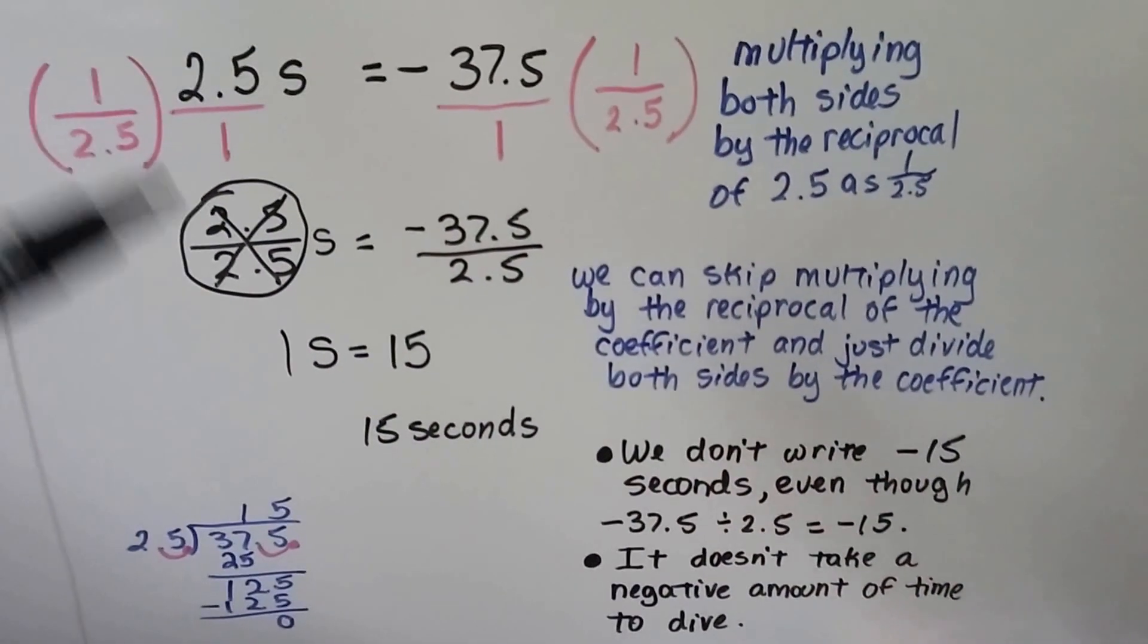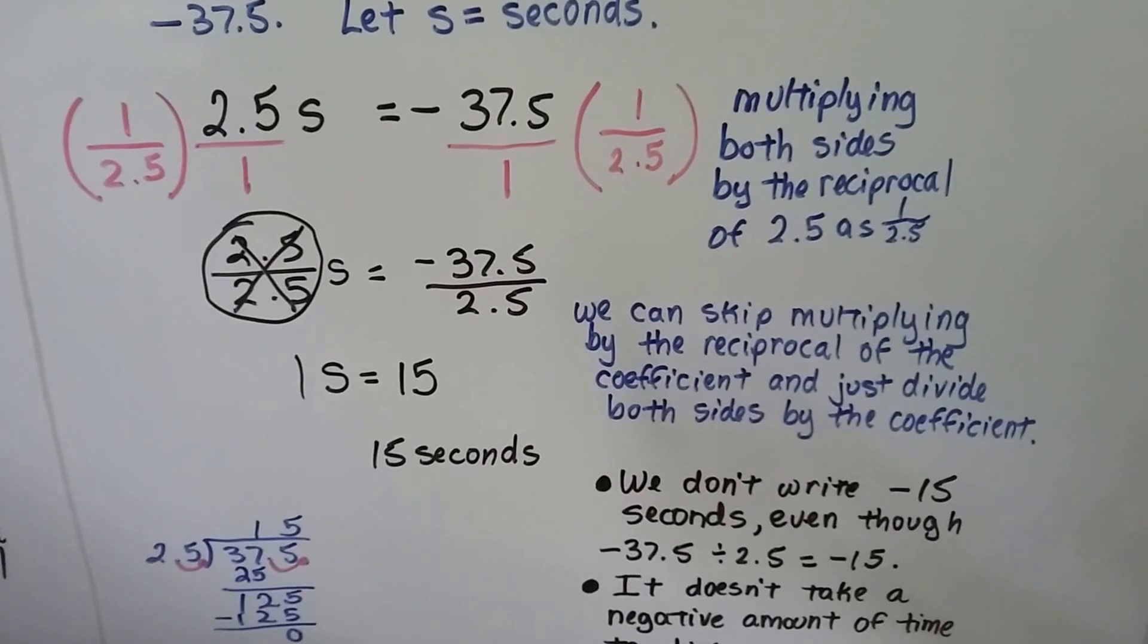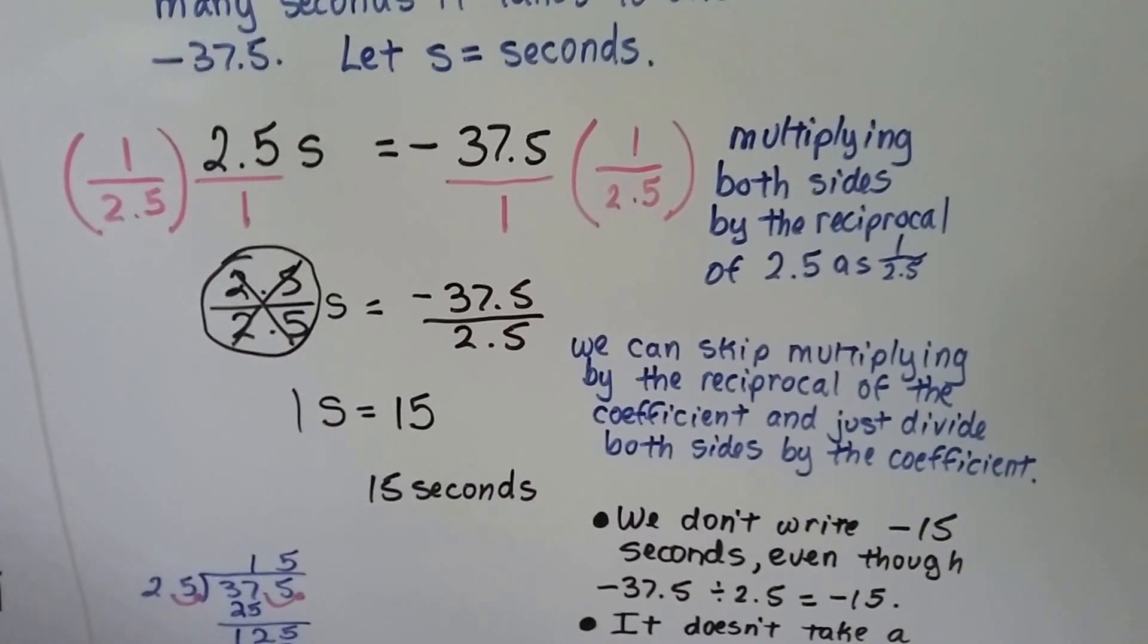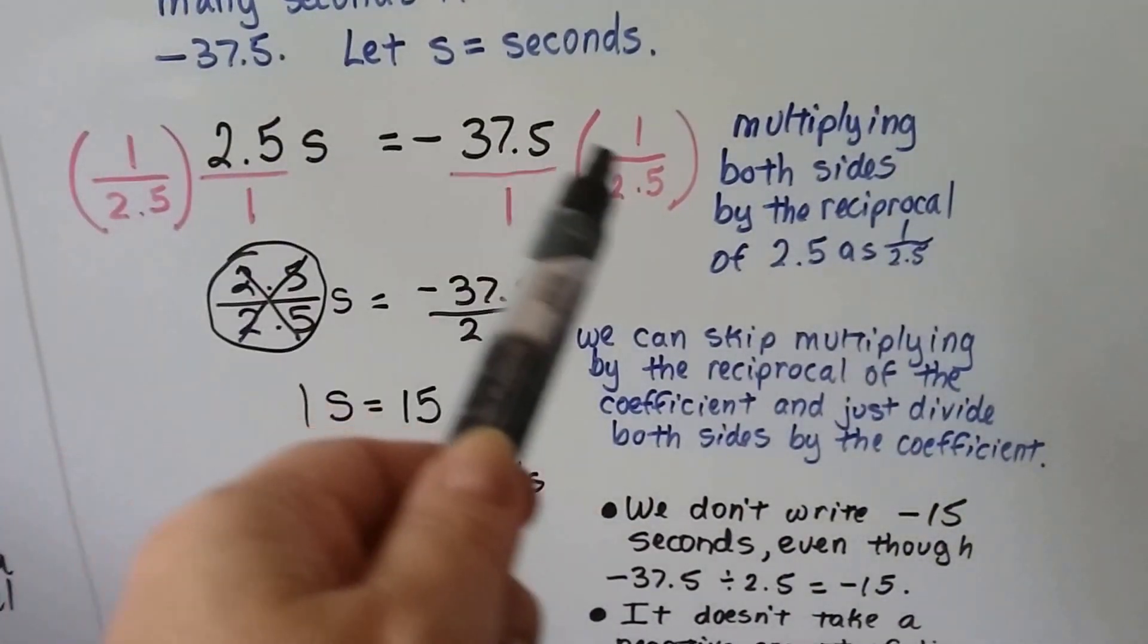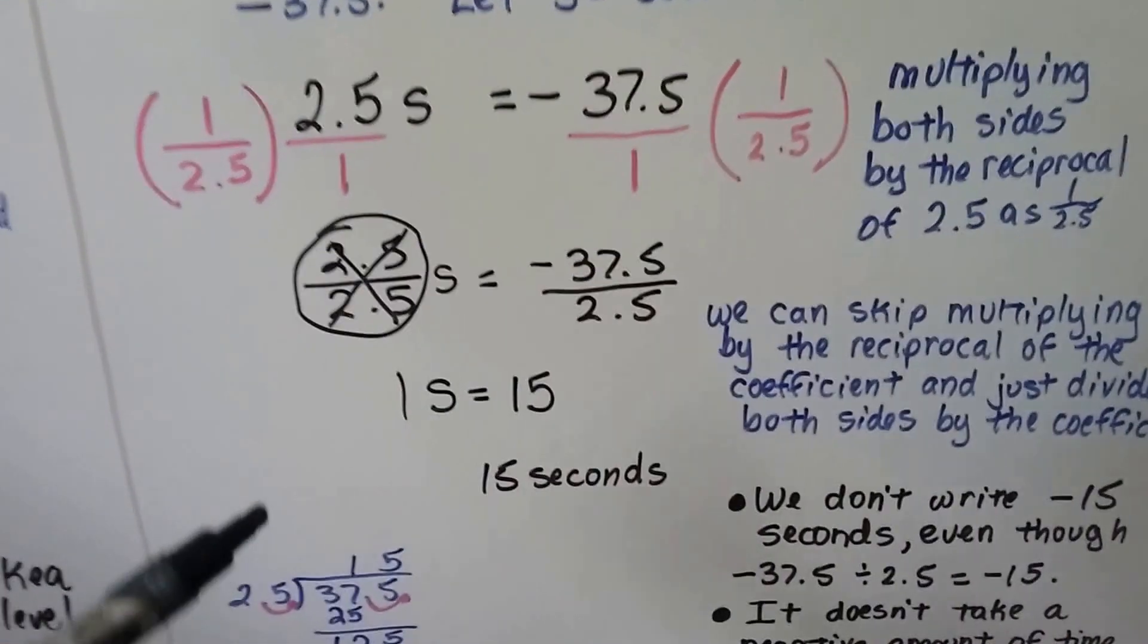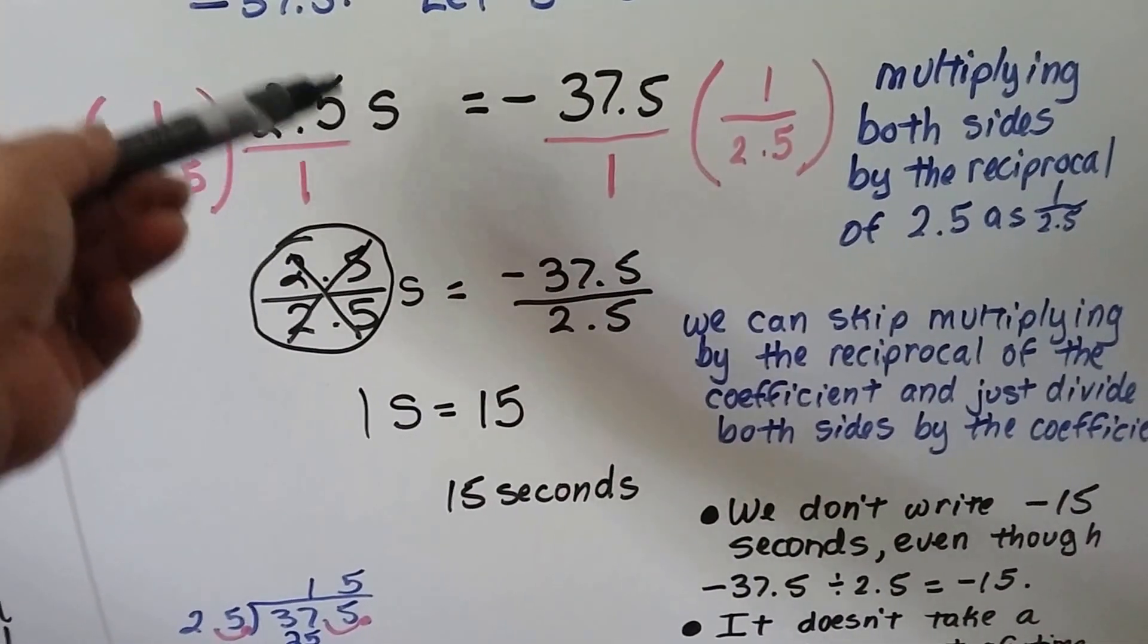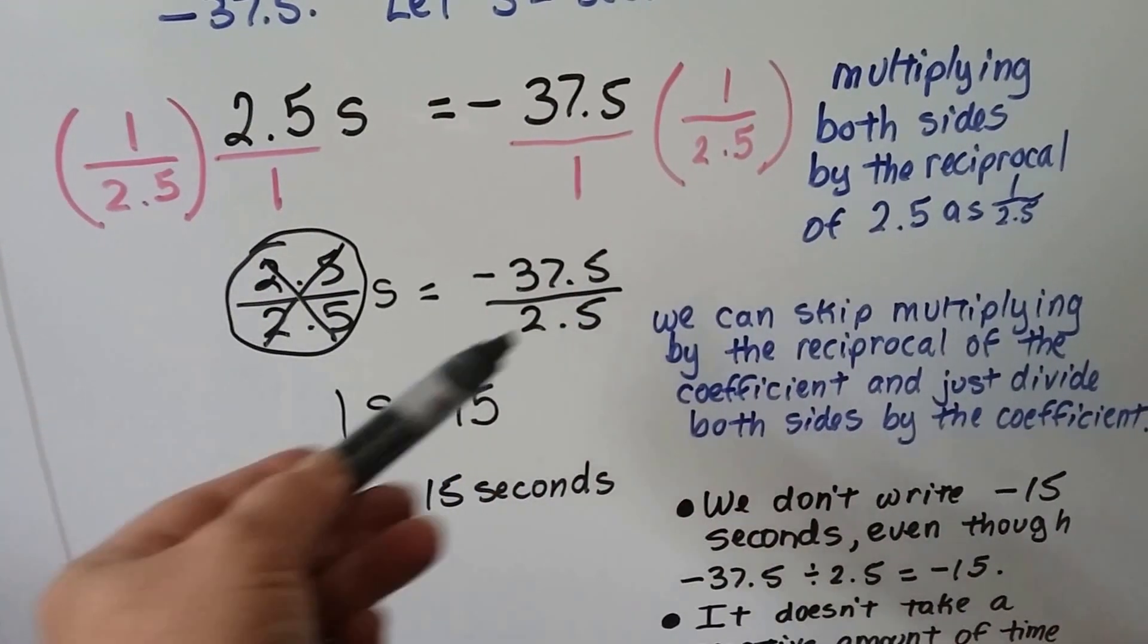Now, we could have skipped multiplying by the reciprocal, because there were no fractions in this problem. And as you follow my videos, you're going to learn this more and more. You can either multiply by the reciprocal on both sides of the equation like we did, and that's the real strict way of doing it.